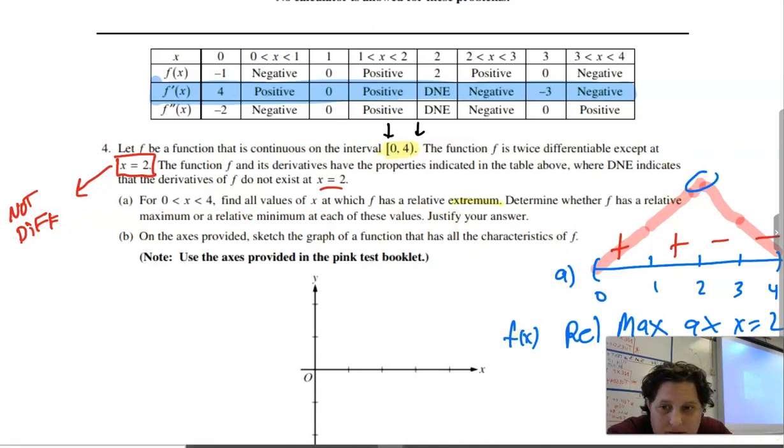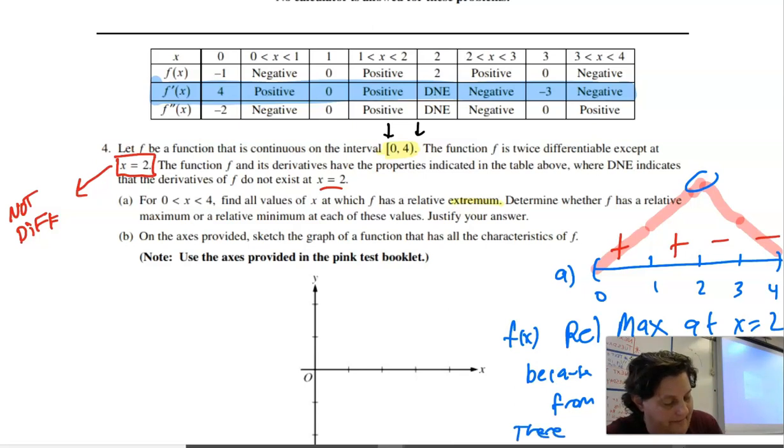It does have a relative max at x equals two. It still can have a point there. It has a relative max at x equals two because f prime of x changes from positive to negative at x equals two. And then you could write there are no relative mins because it never changes from negative to positive.